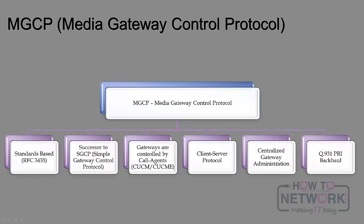The next protocol is MGCP, the media gateway control protocol. MGCP is standards-based — Cisco was a key player in its development but didn't do it alone. It's defined in RFC 3435, and previously also in RFC 2705. MGCP is the successor to SGCP, the simple gateway control protocol. Gateway devices communicating with MGCP are controlled by a call agent — your call manager, unified communications manager, or CME. MGCP is also a client-server protocol with a lot of communication between endpoints and the call agent.